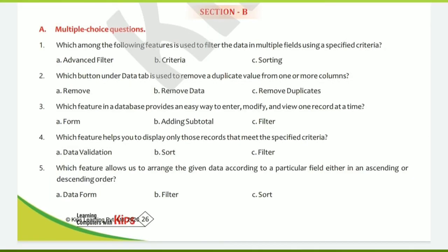Section B-A is Multiple Choice Questions. One question has three options and you choose one correct option. First: which feature is used to filter the data in multiple fields using a specified criteria? For multiple fields, we use Advanced Filter. If only one field is there, then we use only Filter. Answer: Advanced Filter.